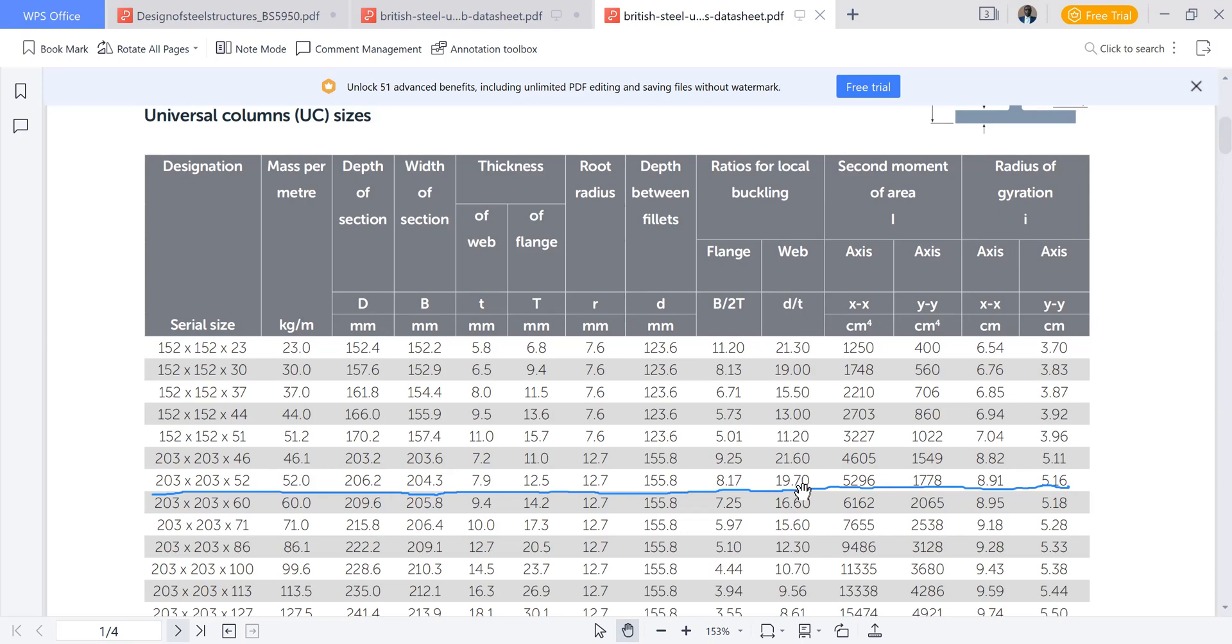We can also obtain our d over t is 19.7 and our b over 2t. Remember, b over 2t is the same as small b over capital T, because technically capital B is equivalent to two times small b.